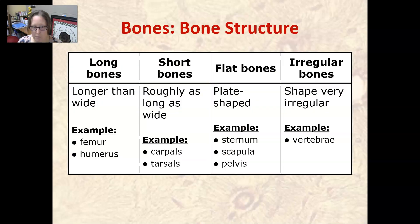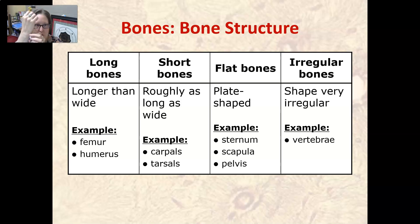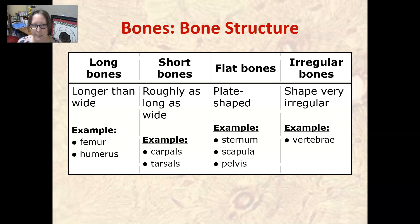Now let's talk about bone structure. Long bones are longer than wide — examples are the femur (leg bone) and humerus (arm bone). Short bones are roughly as long as they are wide — examples are the carpals (wrist bones) and tarsals (ankle bones). Flat bones are plate-shaped — examples are the sternum, scapula, and pelvis. Irregular bones have shapes that are hard to describe — an example is the vertebrae.